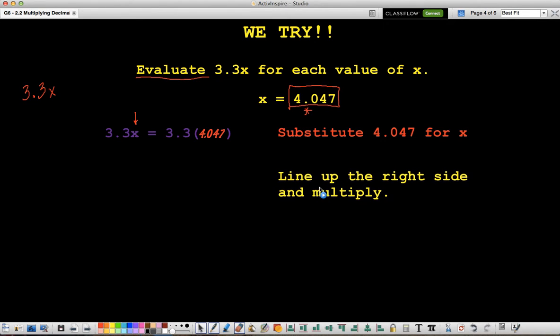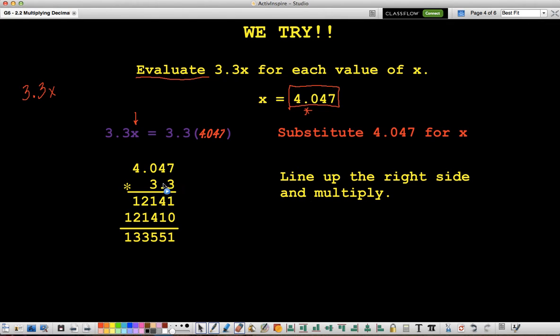So then now, what we do is we follow our steps. We line up the right side, and we multiply. So when I multiply, I get 7 times 3 is 21, carry the 2. 4 times 3 is 12, plus 2 is 14, carry the 1. 0 times 3 is 0, plus 1 is 1, and 3 times 4 is 12.